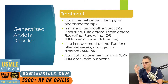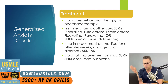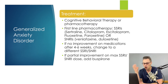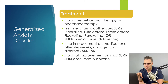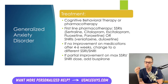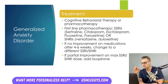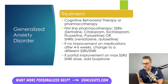Treating GAD involves cognitive behavioral therapy and/or medication, depending on patient preference and financial availability — medications are generally less expensive than therapy. Patients with very severe symptoms may be overwhelmed initially, so starting medications earlier in severe cases might be more appropriate. First-line pharmacotherapy is SSRIs: sertraline, citalopram, escitalopram, paroxetine, fluoxetine. We can also use SNRIs like venlafaxine or duloxetine. If there's no improvement after four to six weeks, switch to a different SSRI or SNRI. If only partial improvement is seen, buspirone can be added on top.